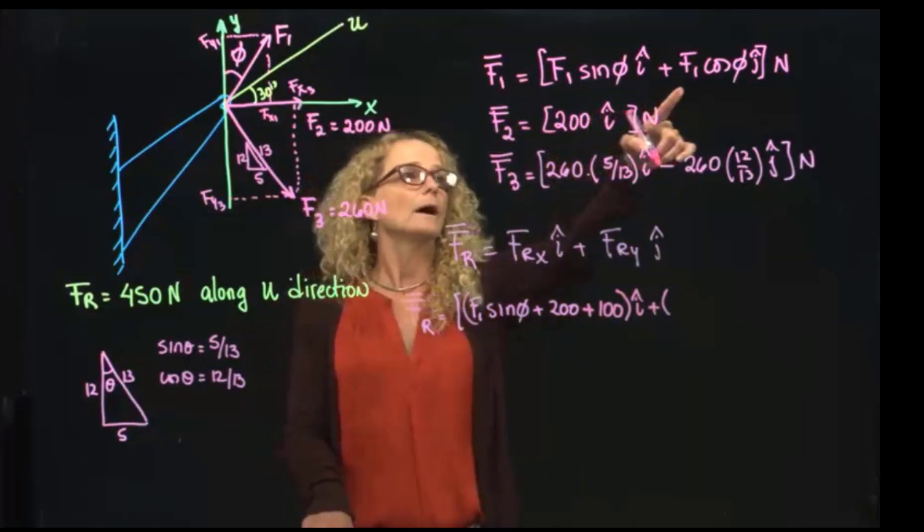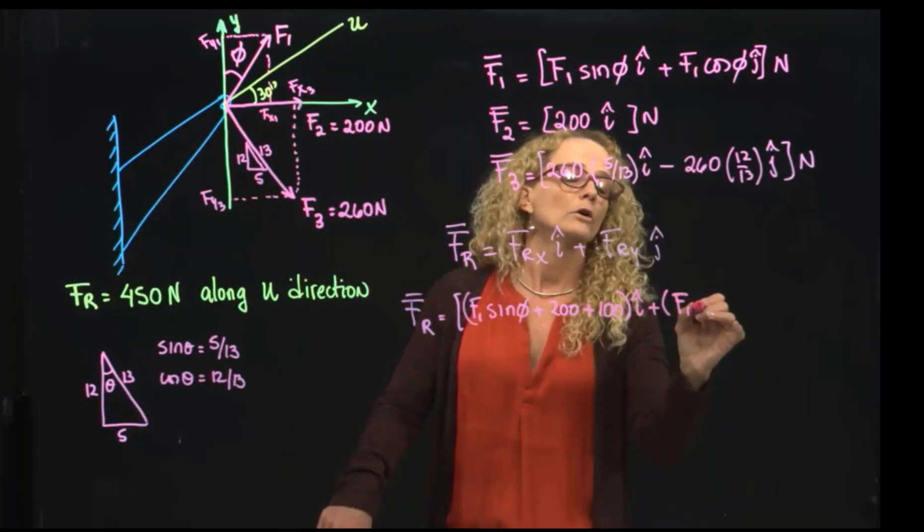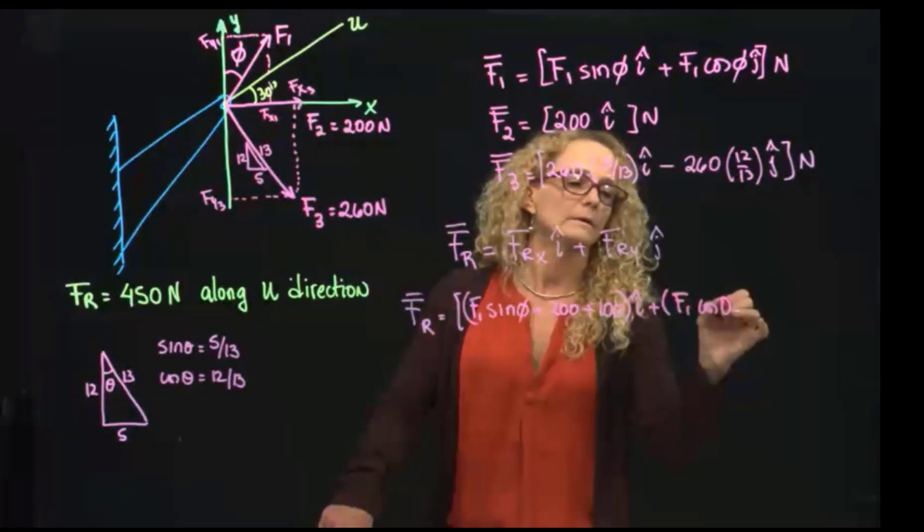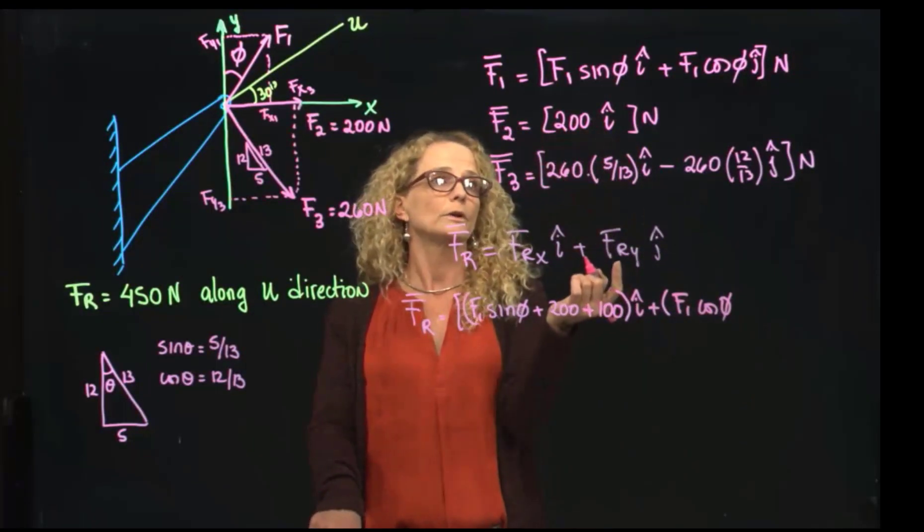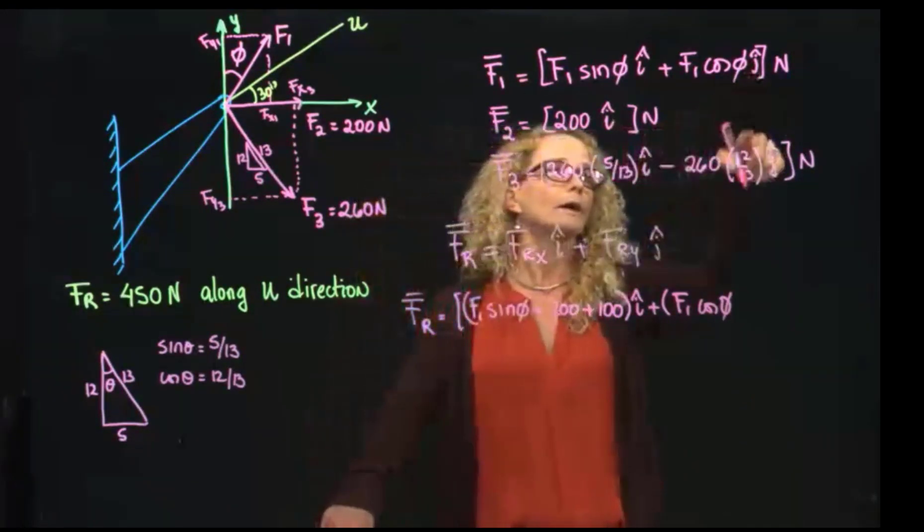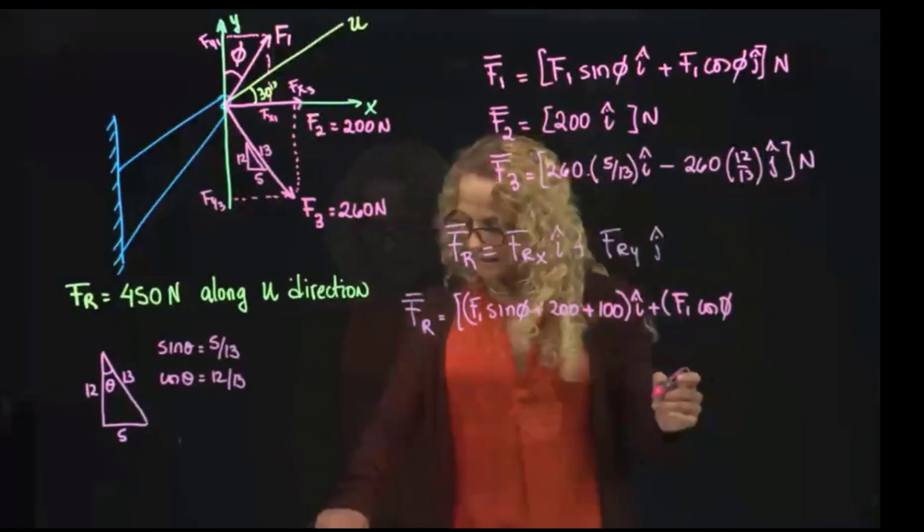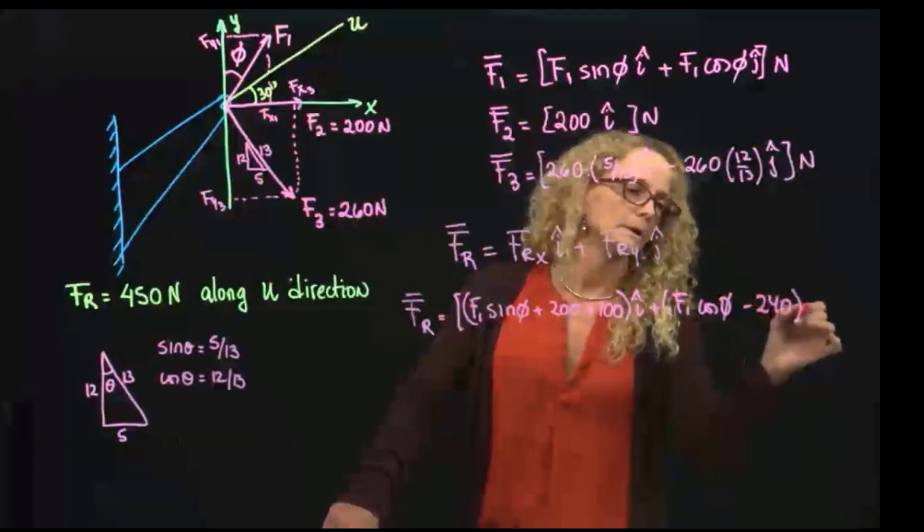And in Y we have F1 cosine of phi. As you see, F2 doesn't have any components in J, right? So we have this one right here, negative 240 in J.